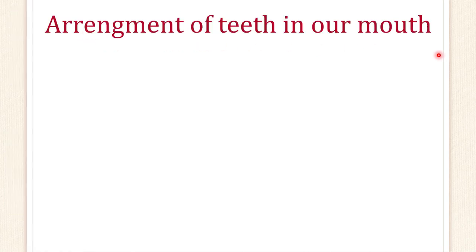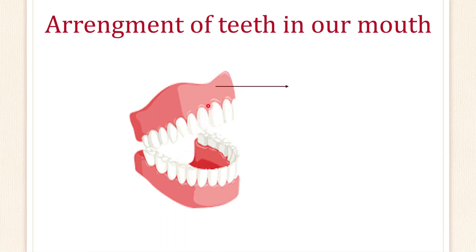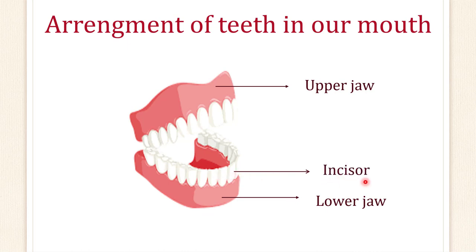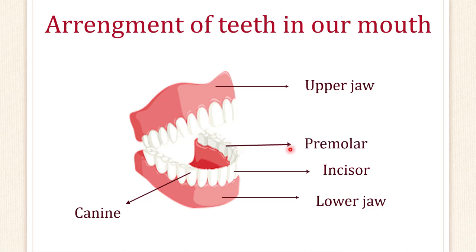Let's understand the arrangement of teeth in our mouth with the help of this image. The upper part of our mouth is called the upper jaw and the lower part is called the lower jaw. The front four teeth are called incisors — incisors are eight in number, four in the lower jaw and four in the upper jaw. Adjacent to the incisor is the canine — canines are four in number, two in the lower jaw and two in the upper jaw. Adjacent to the canine is the premolar — premolars are eight in number, four in the lower jaw and four in the upper jaw. Adjacent to the premolar is the molar — molars are twelve in number, six in the lower jaw and six in the upper jaw.